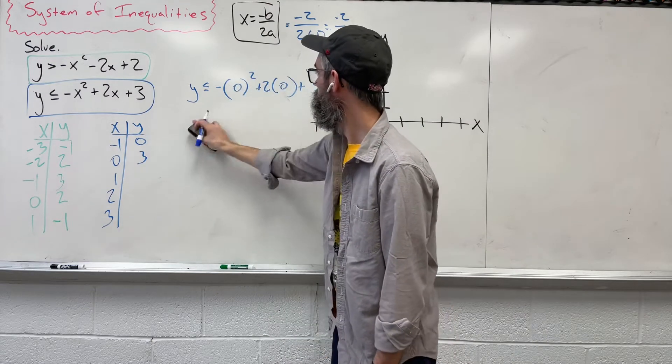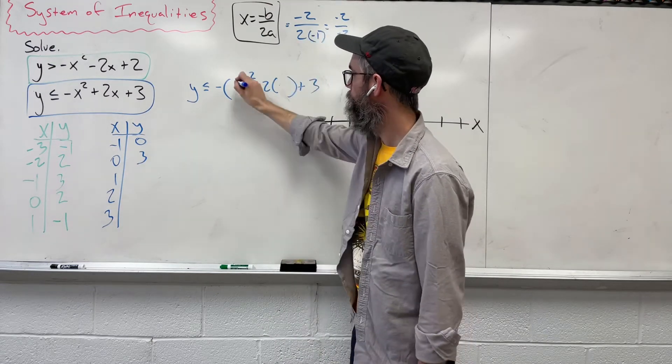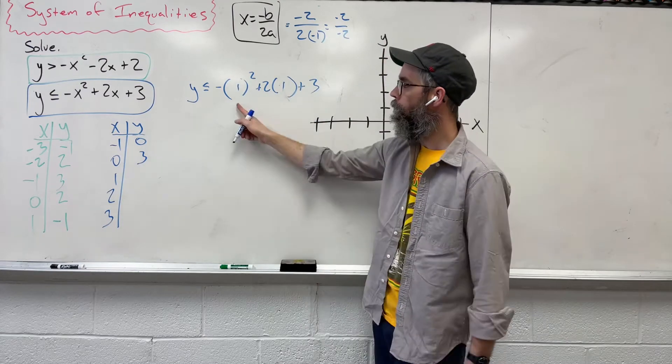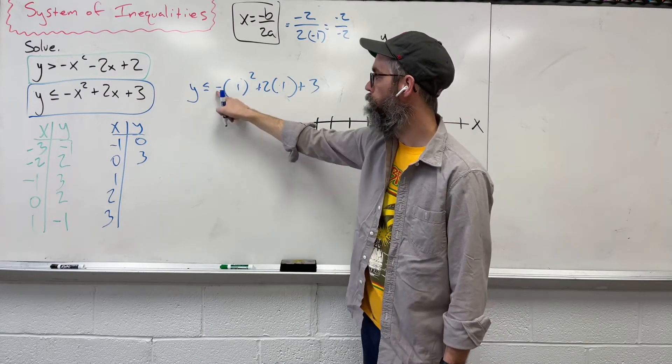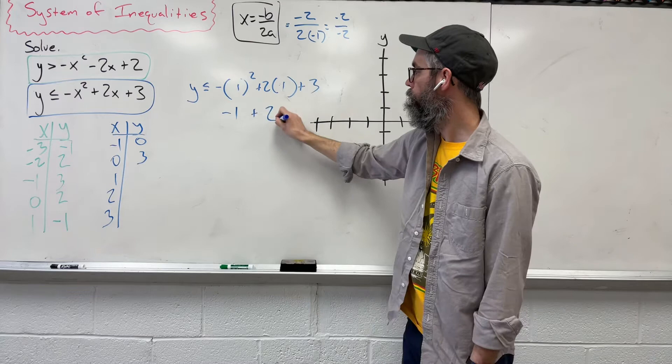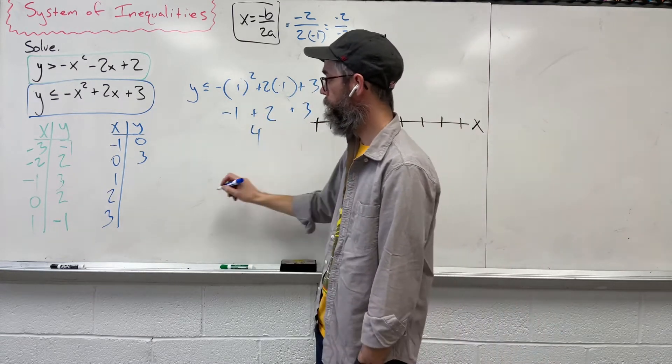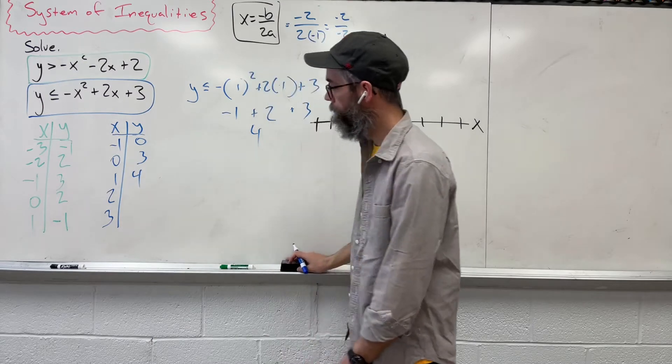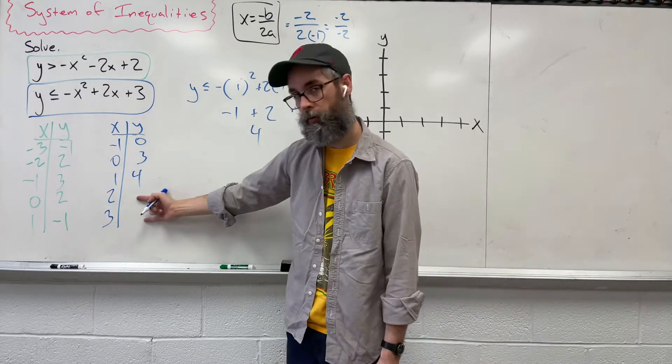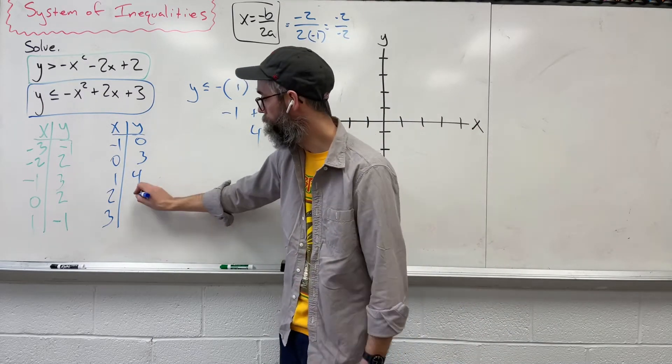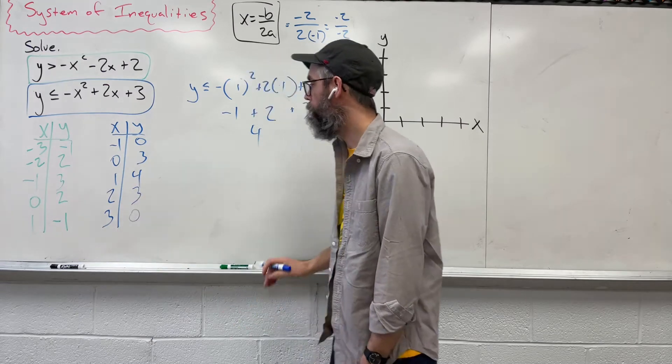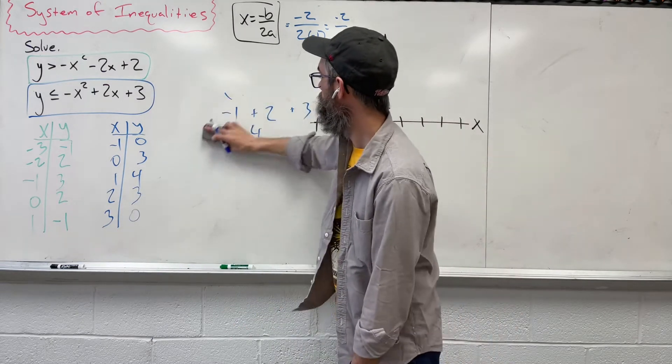Okay, and last, 1 and 1. 1 times 1, 1 squared is 1, bring down the negative, 2, 3, giving us 4. Awesome. And then what do we know about these other two numbers on the bottom? Well, they're going to start repeating themselves. So 3, 0. Great. We don't need any of this anymore.